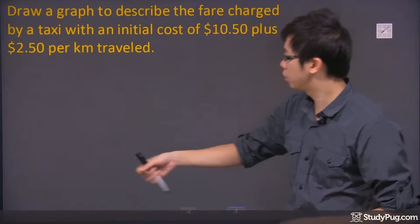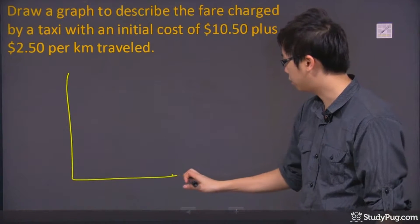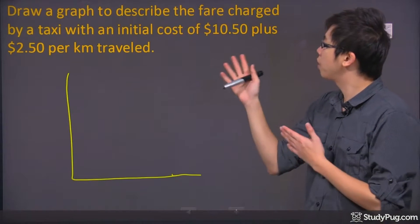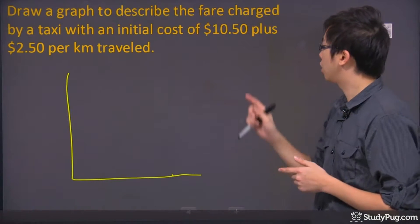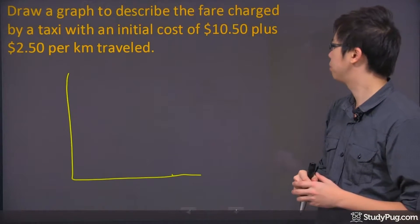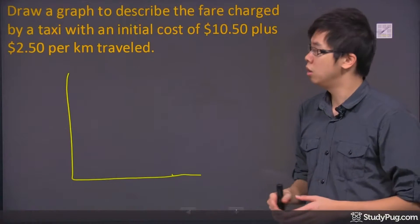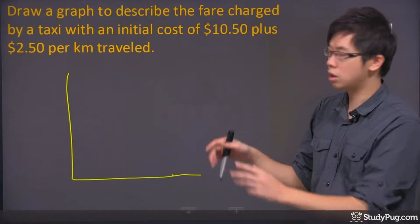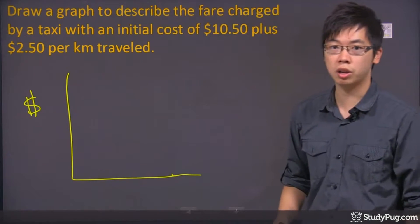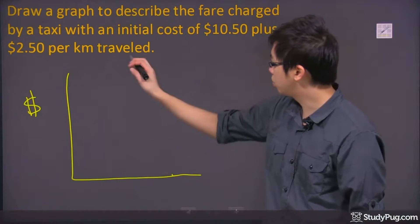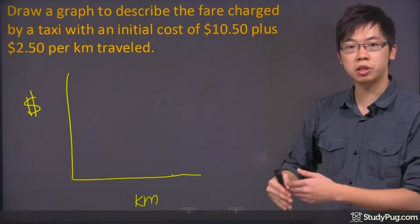So we're here to draw a graph. We're going to start off by saying that there's a graph over here, roughly. Let's make it a little longer if you need it. Describe a fare charged by a taxi with an initial cost of $10.50 plus $2.50 per kilometer traveled. So by looking at the question right here, it sounds like there's money over here, which is dollar sign on the y-axis, and there should be a kilometer down here, which is the distance of travel.